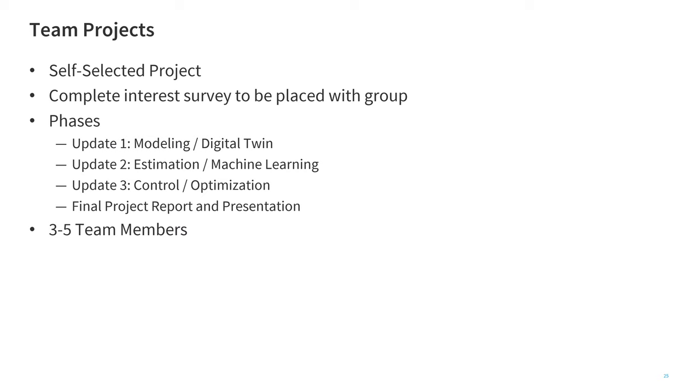A second update is going to be using data from that device or data that you have available from your process to be able to improve the model or perform machine learning, classification, or regression methods. Update three is going to be control and optimization. We're going to take those models and then have an advisory system or some type of automatic feedback control. The final project will include a report and presentation and you'll be able to share your results with others in the course. I recommend teams of three to five team members that include participants from industry and academia.